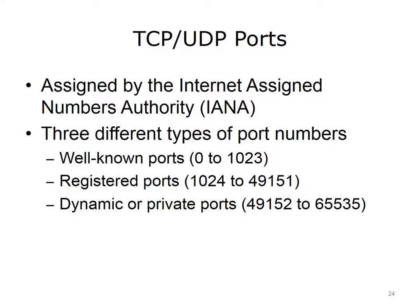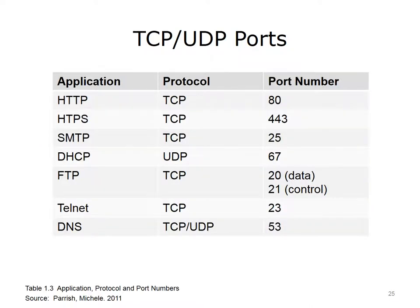The Internet Assigned Numbers Authority, IANA, assigns the port numbers. There are three different types of port numbers: well-known ports, 0 to 1,023; registered ports, 1,024 to 49,151; and dynamic, or private, ports, 49,152 to 65,535. The table shows some common applications, the protocol they use, and their associated port number.